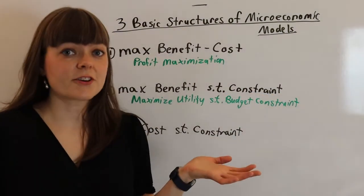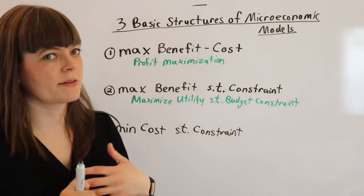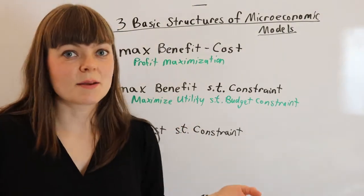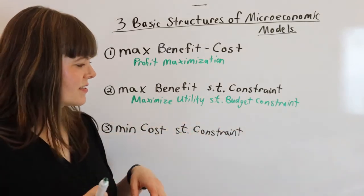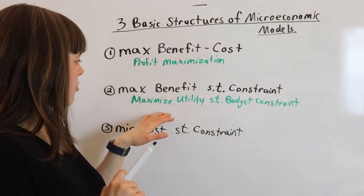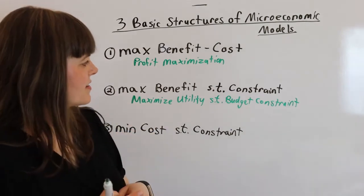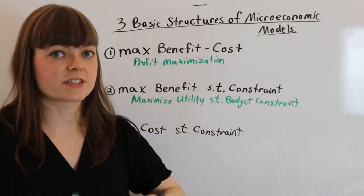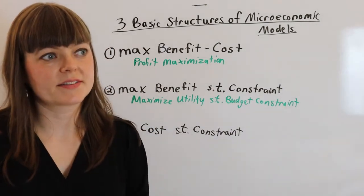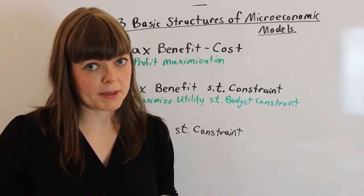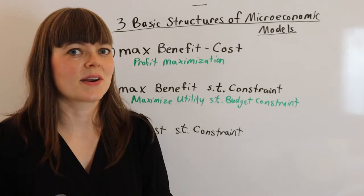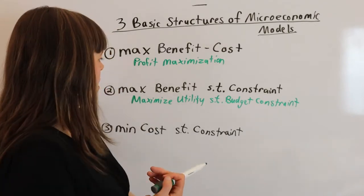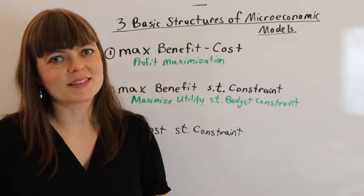But there can be other setups. For example, you could maximize the amount you get done subject to a time constraint. You can have all kinds of constraints. At the end of the course we'll see this when we look at social welfare functions. A government may maximize social welfare of the people subject to a constraint on how much money that government has to spend. There are lots of different ways this can show up.